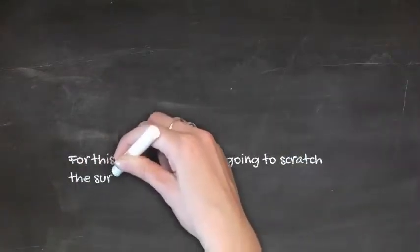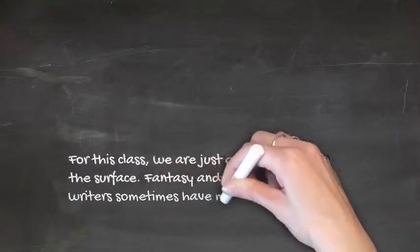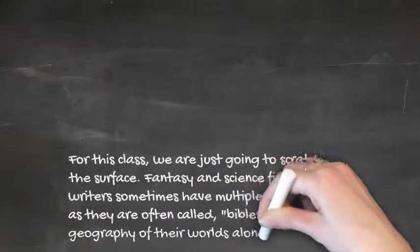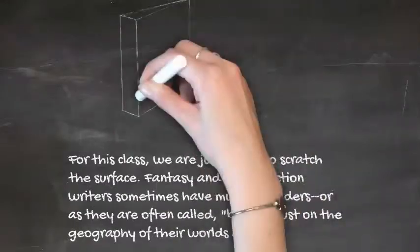For this class, we're just gonna scratch the surface. Fantasy and science fiction writers sometimes have multiple binders, or as they are often called Bibles, just on the geography of their worlds alone.